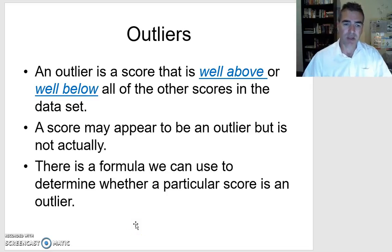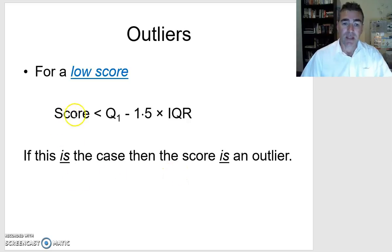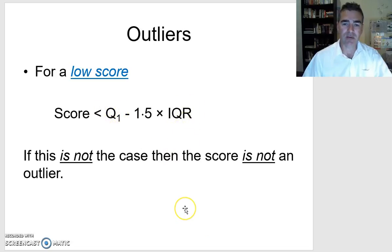There's a formula we can use. If it's a low score — if we think it's well below all the others — then the score has to be less than the lower quartile minus 1.5 times the interquartile range. If that is the case, then the score is an outlier. If the score is not less than that result, then it's not an outlier. So we need to make sure we have our calculator and that we know how to find the lower quartile and the interquartile range.